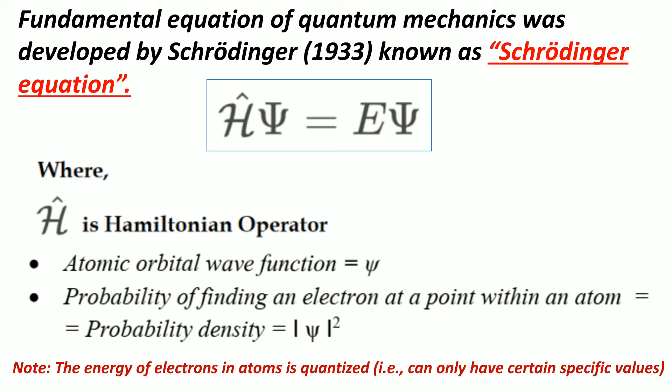The fundamental equation of quantum mechanics was developed by Schrödinger and is known as the Schrödinger equation. As shown here: H-psi equals E-psi, where H is the Hamiltonian operator. Psi is the atomic orbital wave-function, and psi-squared represents the probability of finding an electron at a point within an atom, which is also called probability density.